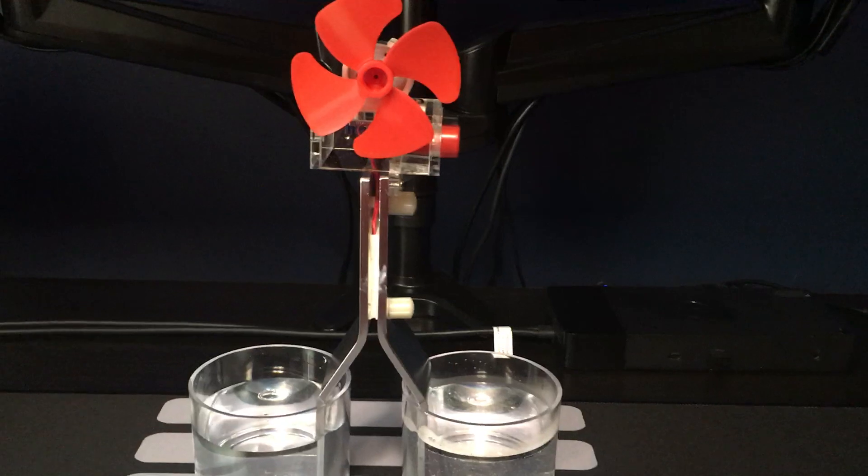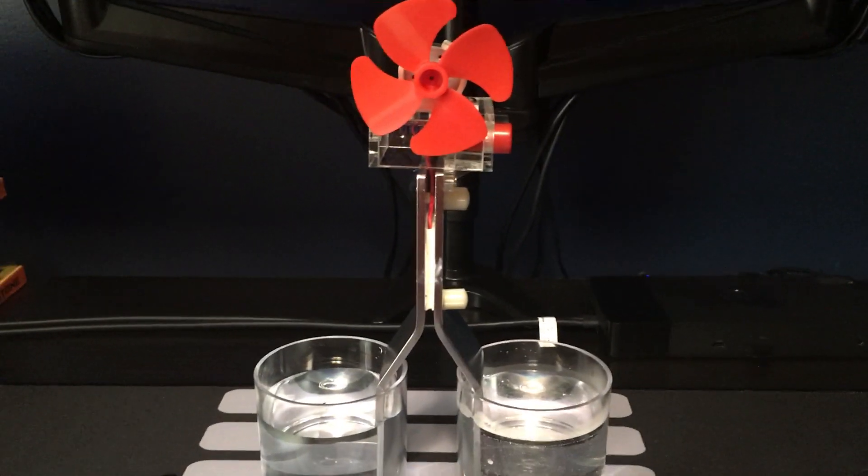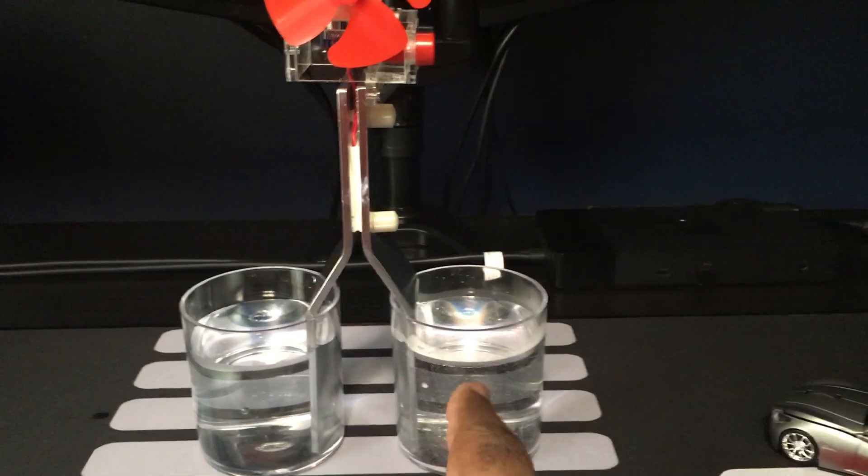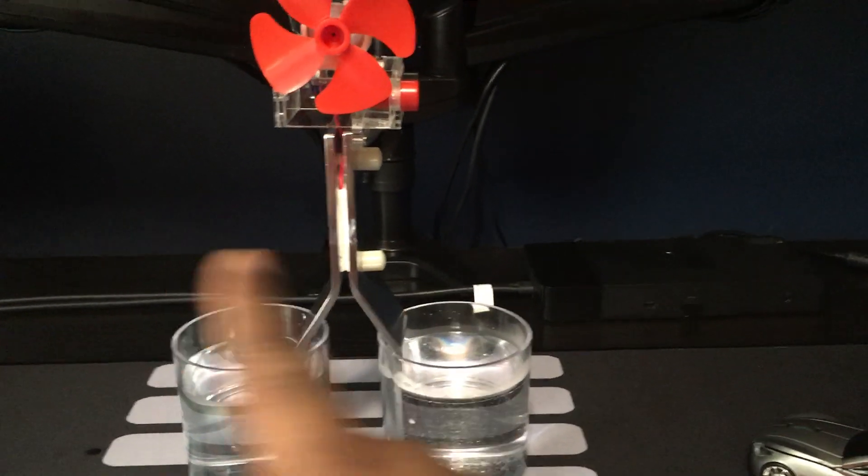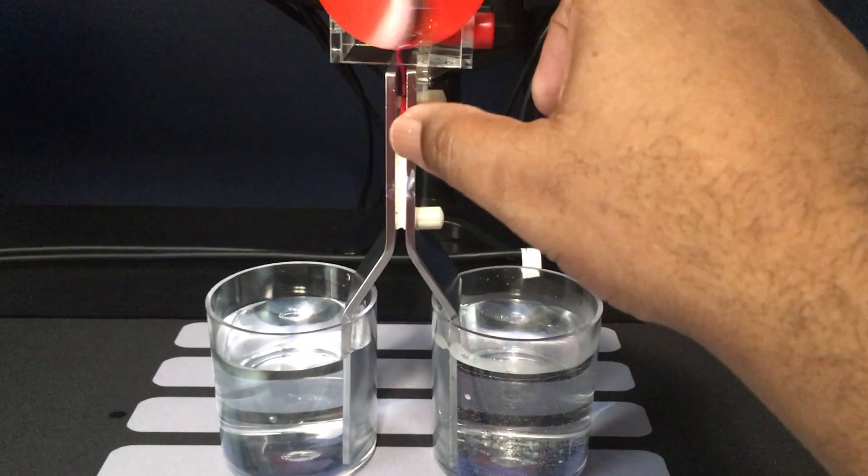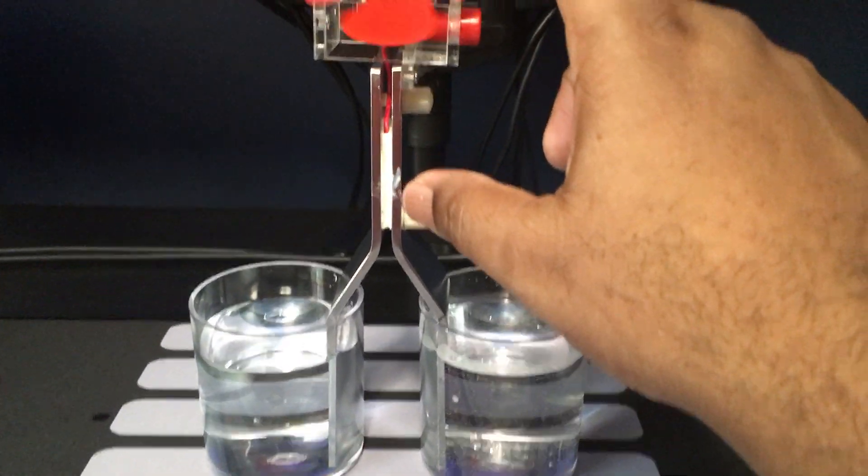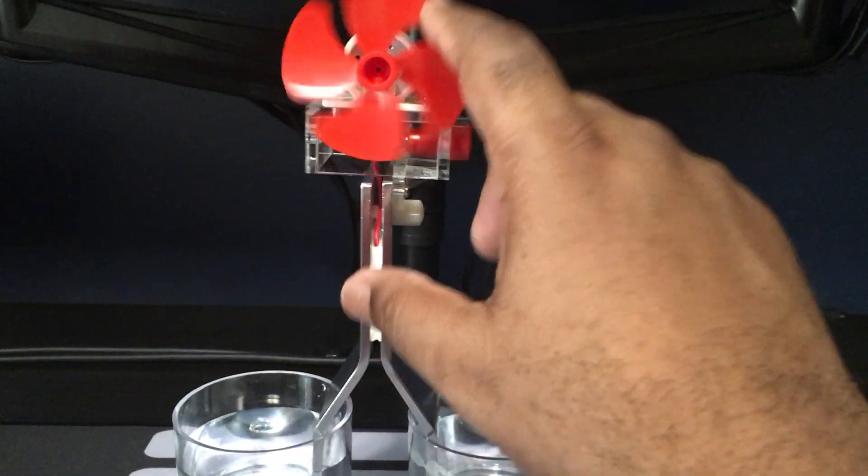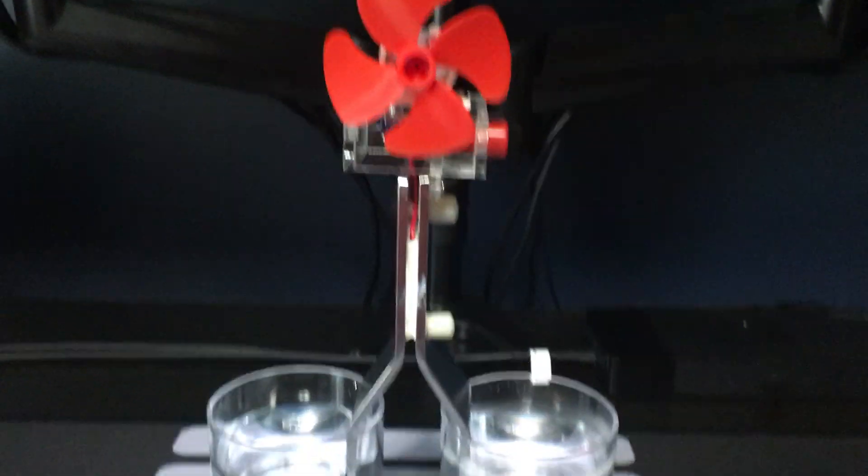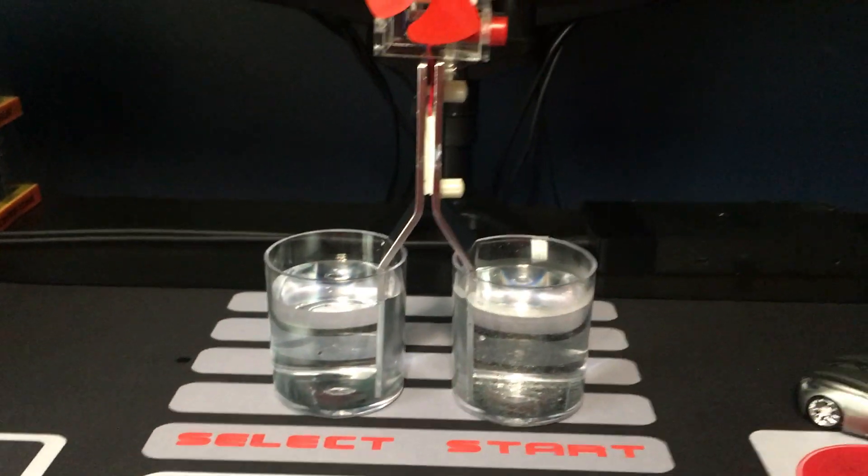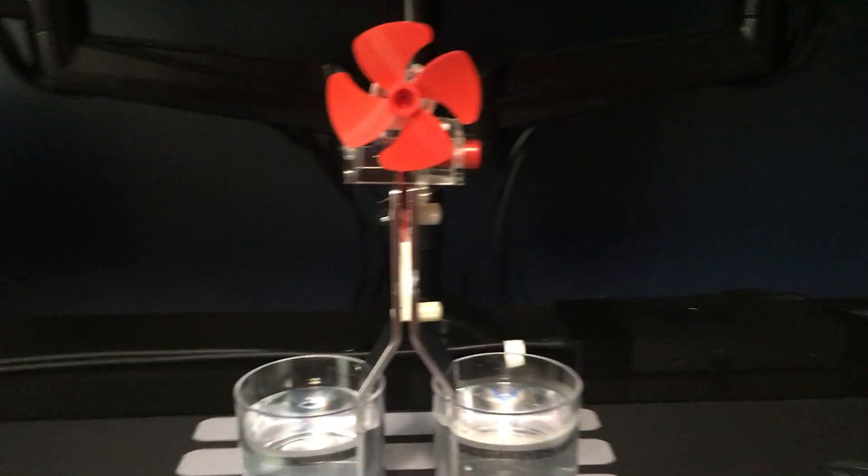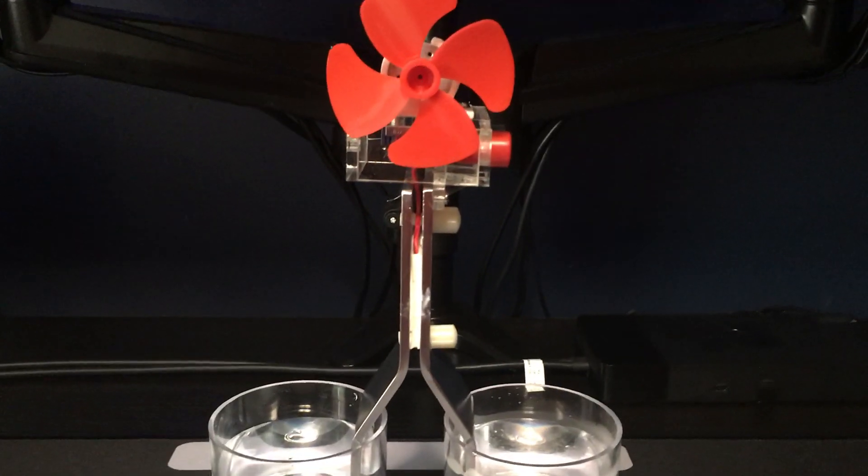You notice the fan stopped, which means that hot side is now dropping temperature to almost room temperature and the temperature delta is gone or diminishing. It's still there a little, just enough but not enough to keep it turning, but it's dropping, which makes sense.